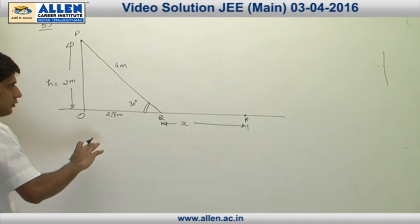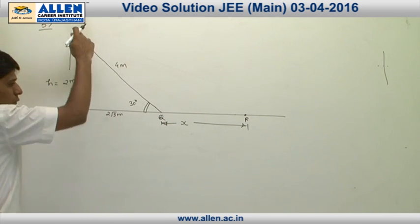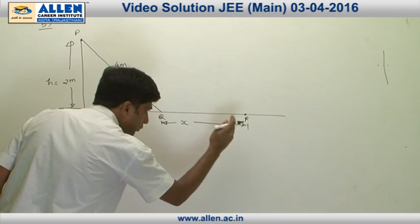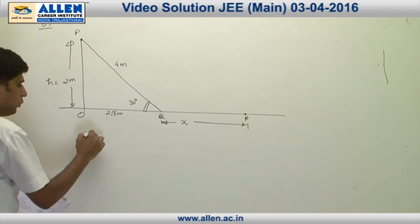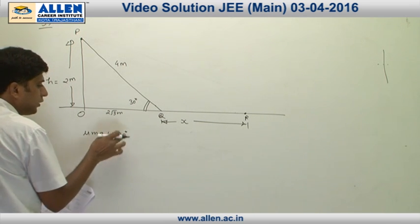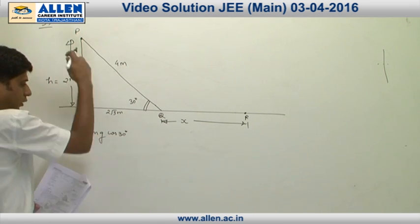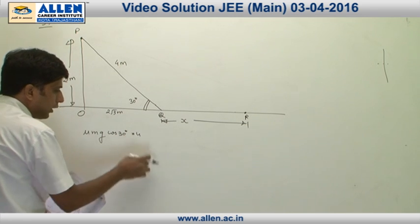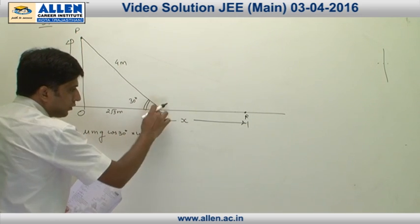We get mu mg cos 30, that is the value of friction force, into 4 equals to the work done by friction mu mg x.